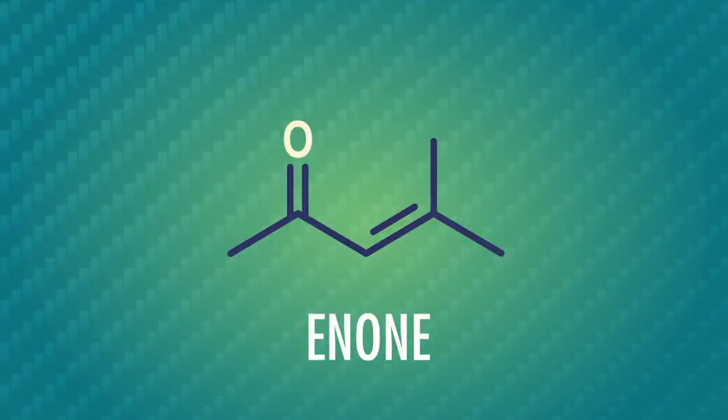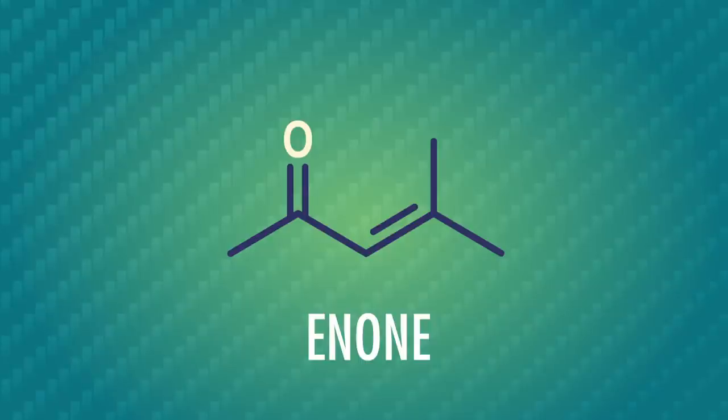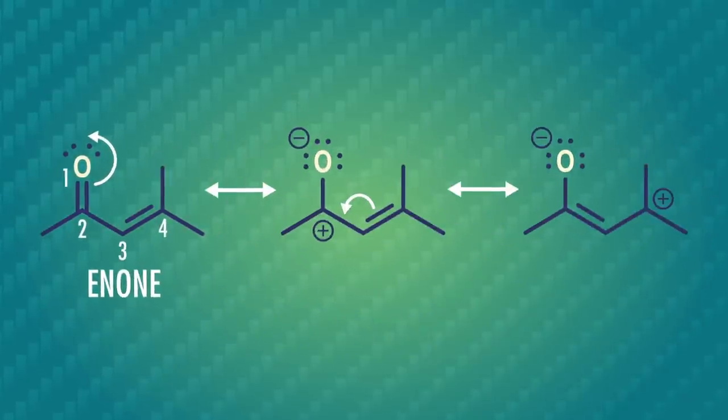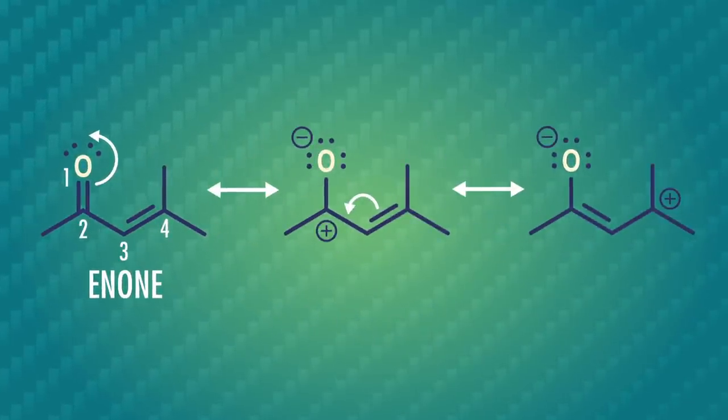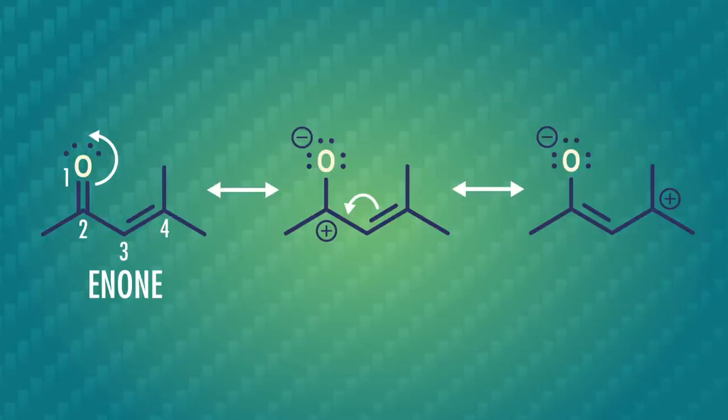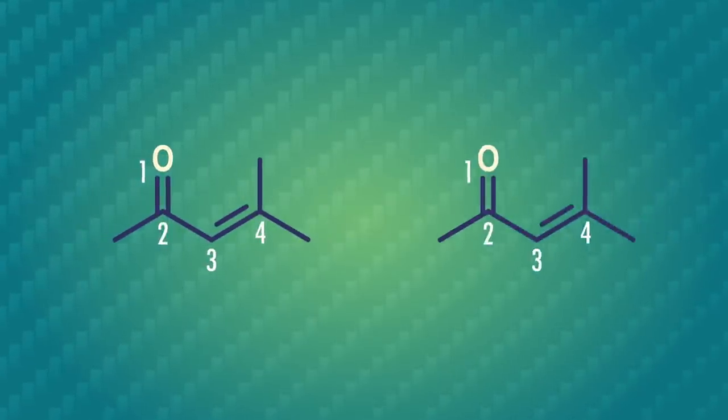Besides being fun to make, enones can also be reagents in some interesting chemical reactions. Let's take a quick look at their structure. They're often numbered based on the atoms in their conjugated system, starting with the high-priority oxygen atom. Looking at some resonance structures, we can see that the 4 position is electrophilic, which means it can be attacked by nucleophiles. Of course, the carbonyl carbon is also electrophilic, as they've been throughout this whole series, and the known universe.